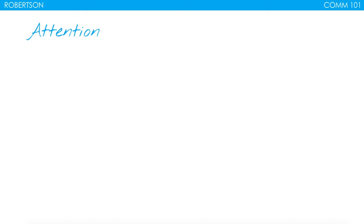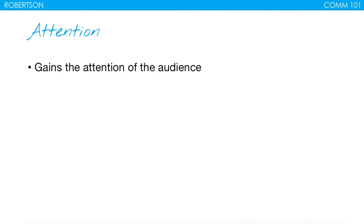Typically when you're gaining the attention of your audience for a persuasive speech, there are a couple of things you'll see. We have other videos that discuss different ways of gaining an audience's attention, so we won't go too deep into that today. First thing: you gain the attention of the audience in the very first few sentences, really trying to draw them in and make them feel like they want to hear more about this topic. After that, you reveal the topic of the speech.